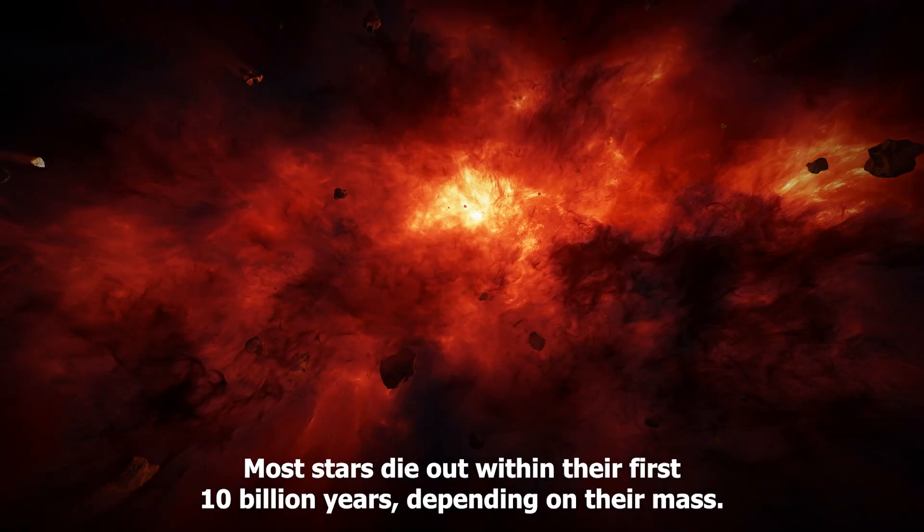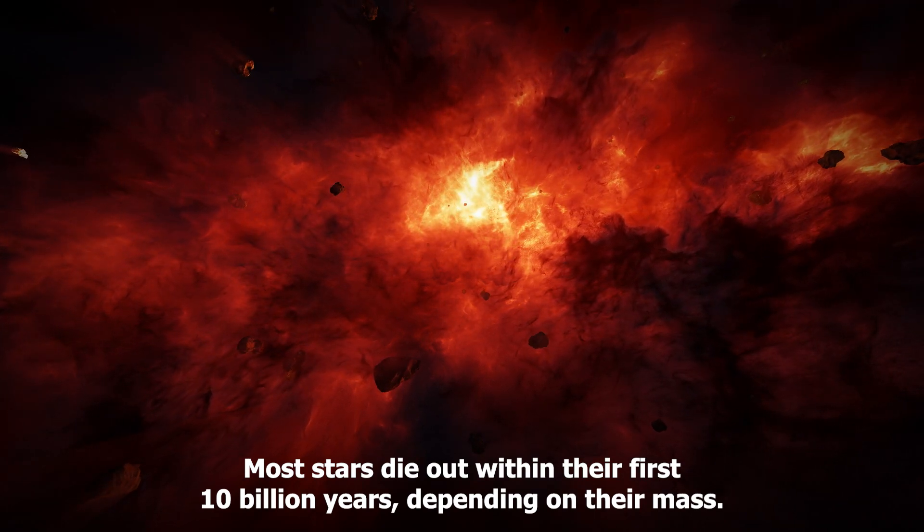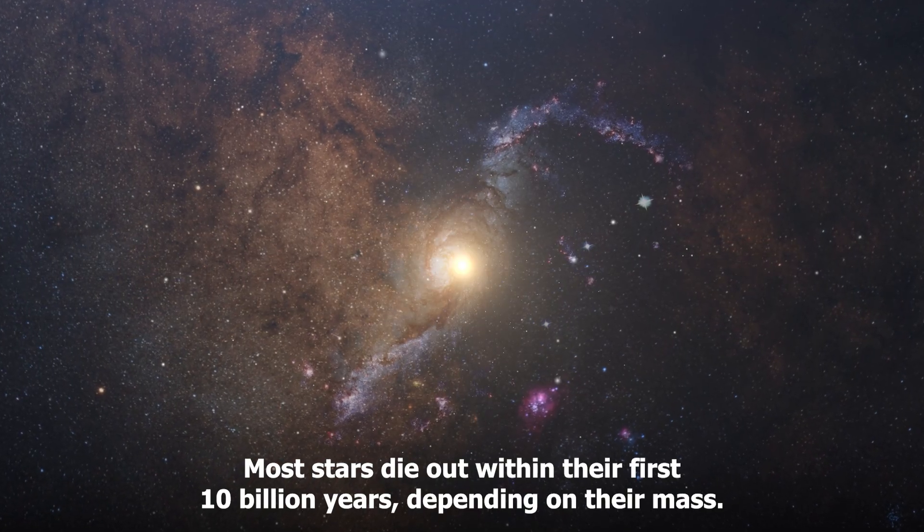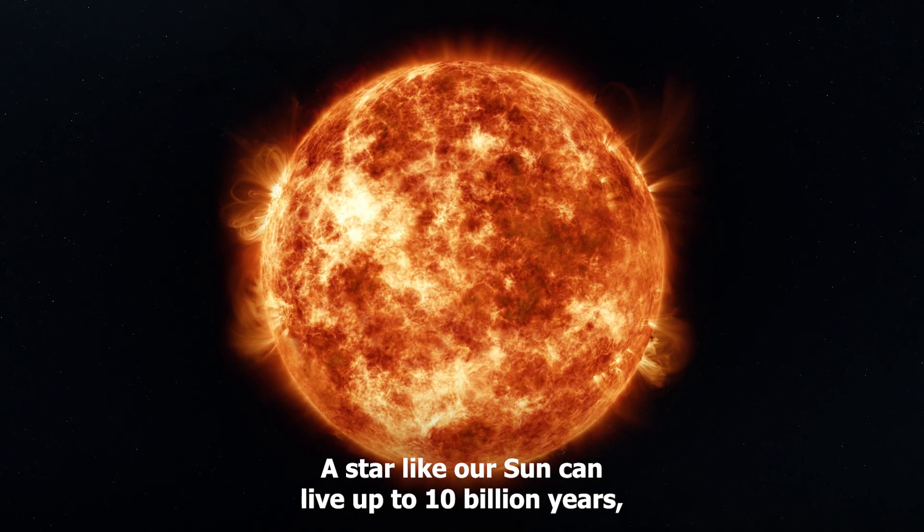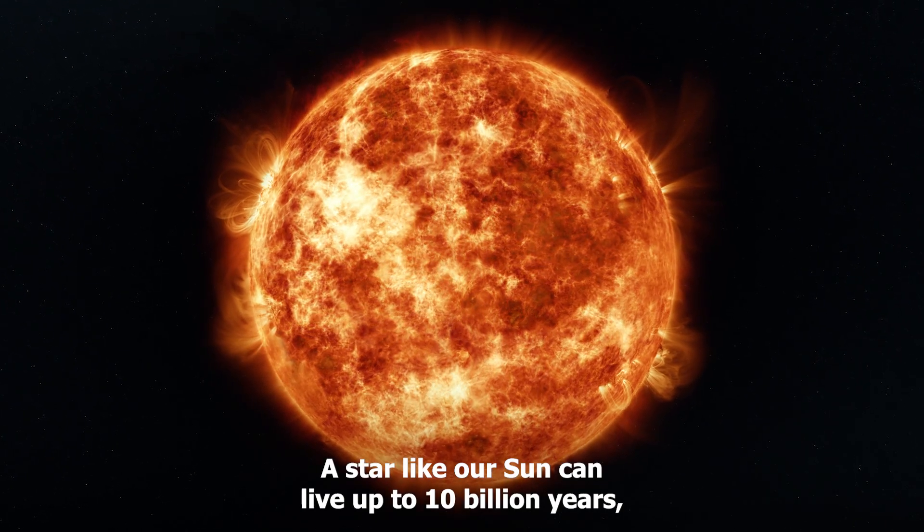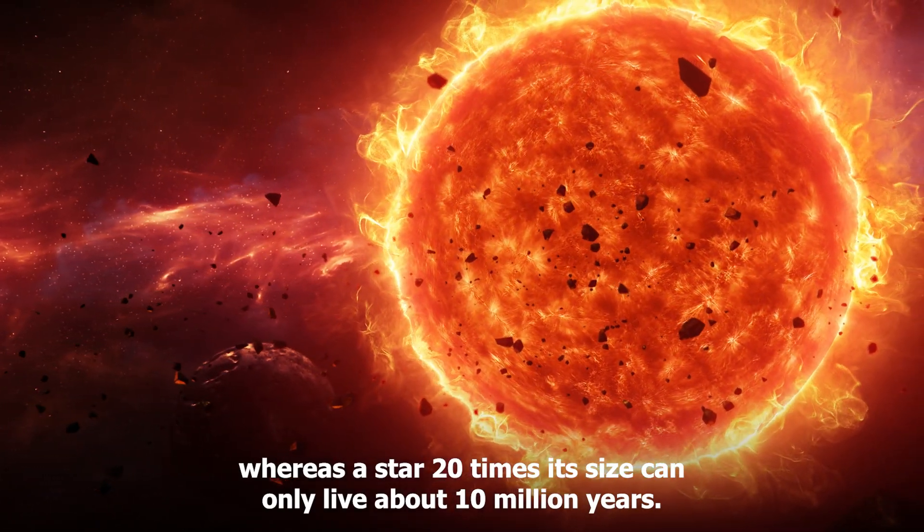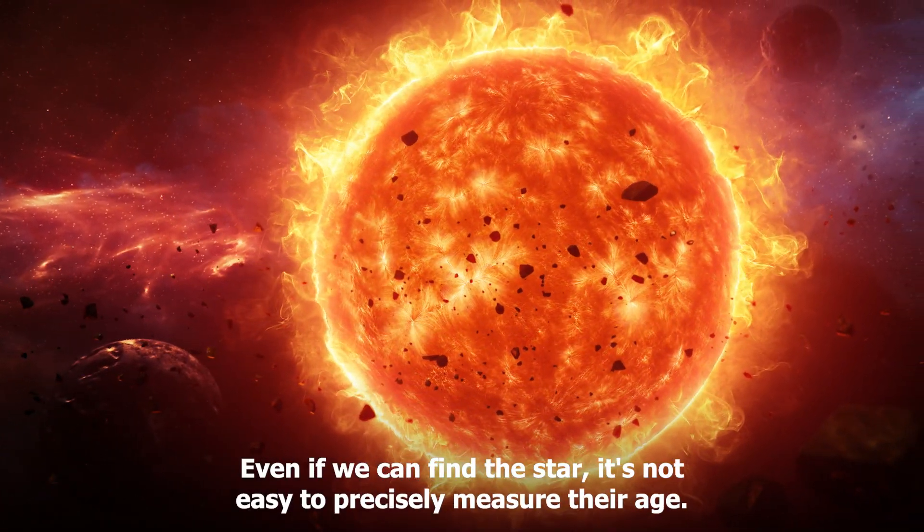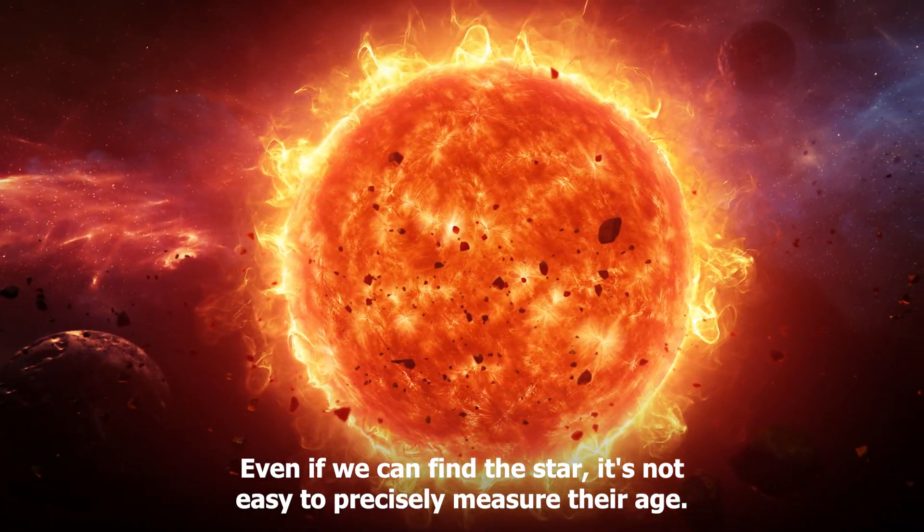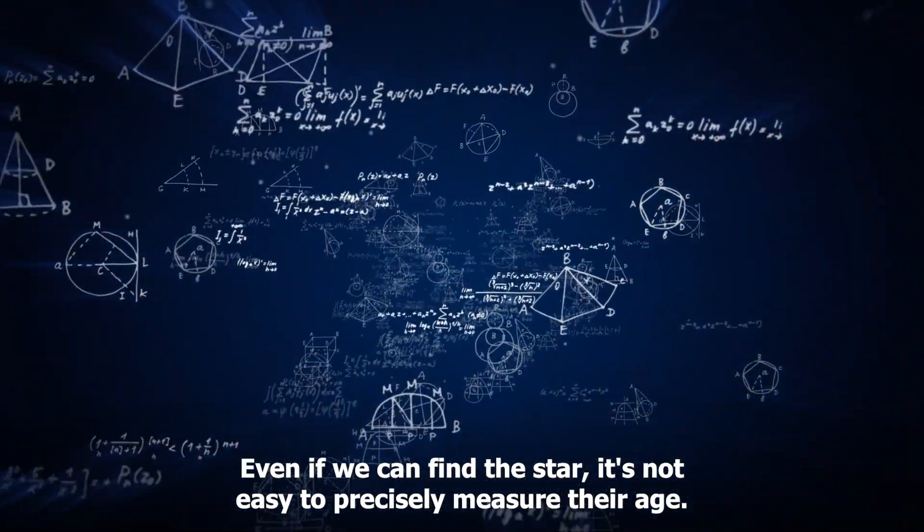Most stars die out within their first 10 billion years, depending on their mass. A star like our Sun can live up to 10 billion years, whereas a star 20 times its size can only live about 10 million years. Even if we can find the star, it's not easy to precisely measure their age.